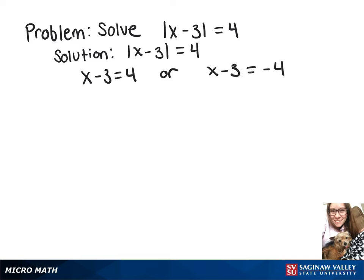Let's start by solving this one on the left, and we'll add 3 to both sides. That's going to give us x equals 7. Now if we go back to the one over here, we're going to add 3 to both sides again. So that's going to give us the final answer of x equals 7, or x equals negative 1.